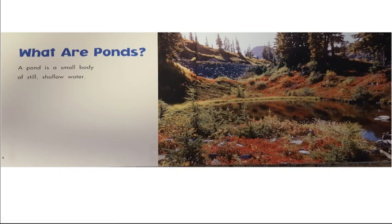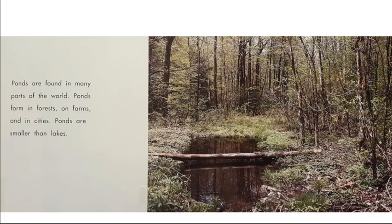What are ponds? A pond is a small body of still, shallow water. Shallow means not very deep — most ponds are very shallow. They are not deep like the ocean. Ponds are found in many parts of the world. Ponds form in forests, on farms, and in cities. Ponds are smaller than lakes. So ponds can be found in many places like in parks, in the woods, or on a farm in the middle of a field.